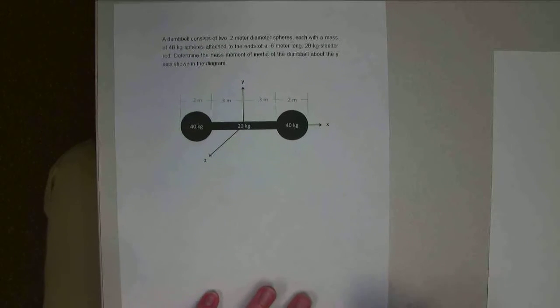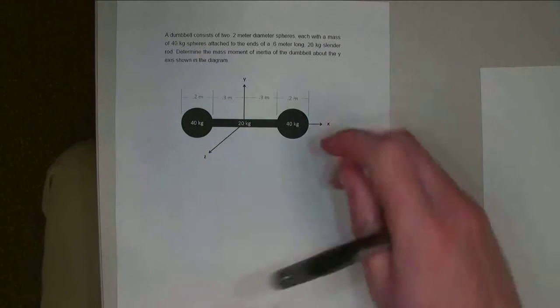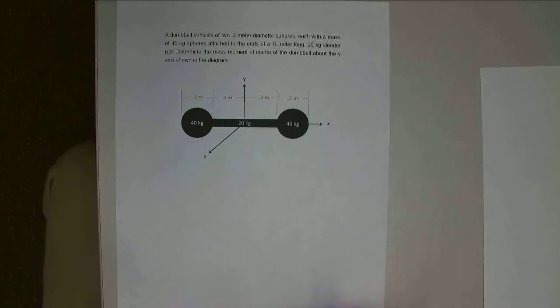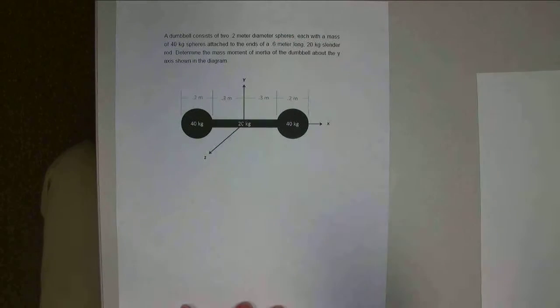So what we're asked to do is to find the mass moment of inertia about the y-axis through the center of this shape. The centroid, since it's symmetric, is not really that hard to figure out. The centroid is going to be right here in the center. So everything is going to be measured from there.